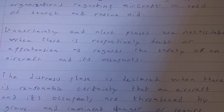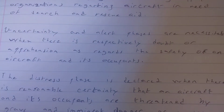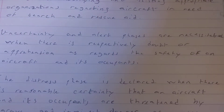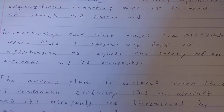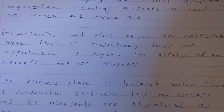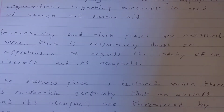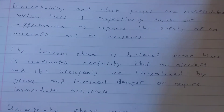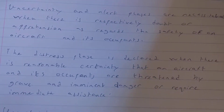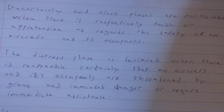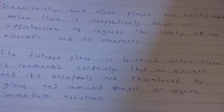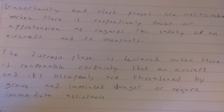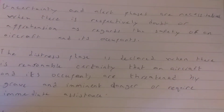The three phases are: uncertainty phase, alert phase, and distress phase. The uncertainty phase is declared when there is doubt or apprehension regarding the safety of an aircraft and its occupants. The distress phase is declared when there is reasonable certainty that an aircraft and its occupants are threatened by grave and imminent danger and require immediate assistance.